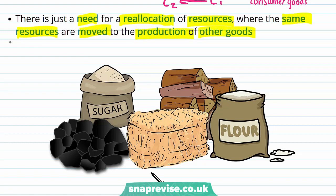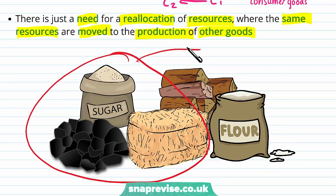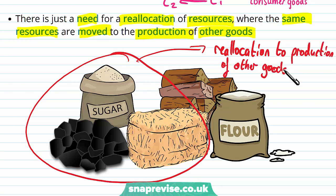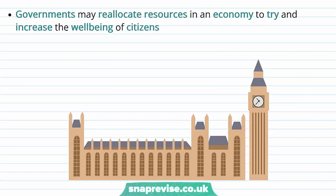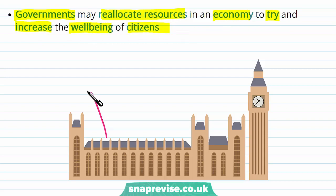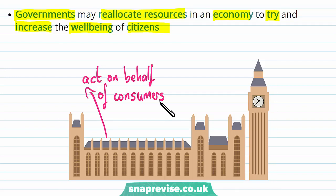We have the same number of resources but they are being moved to the production of other goods. So these resources are being moved to the production of another kind of good — it's a reallocation of resources. One economic agent that might be involved in this reallocation is the government, which may reallocate resources in an economy to try and increase the well-being of citizens.